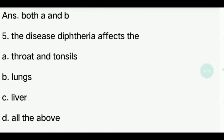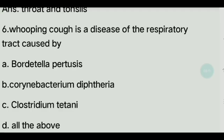Fifth question. Diphtheria disease — what is the effect on the body? Options: Throat and tonsils, Lungs, Liver, All the above. Answer is Throat and tonsils.